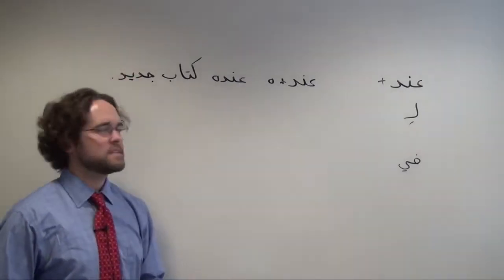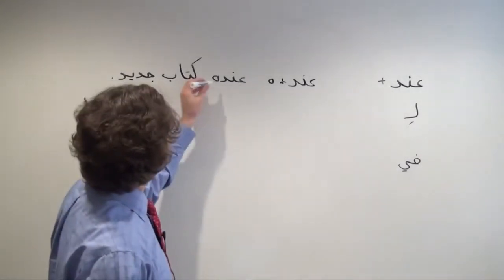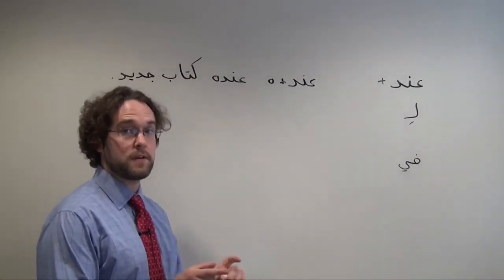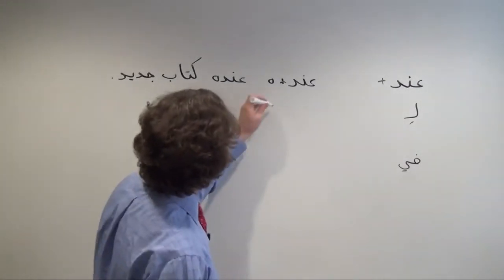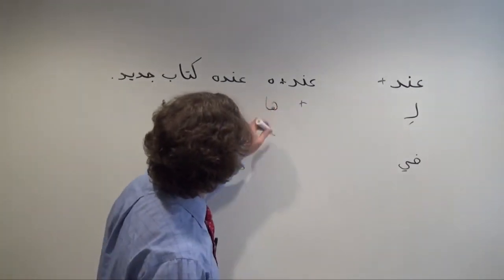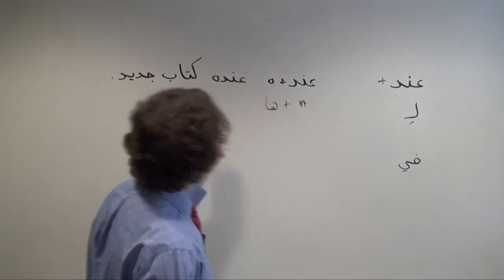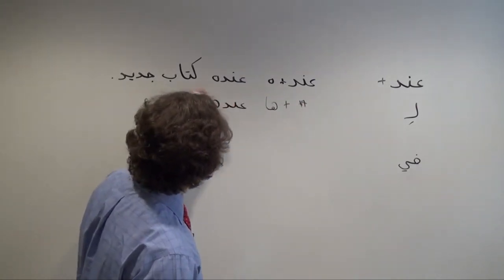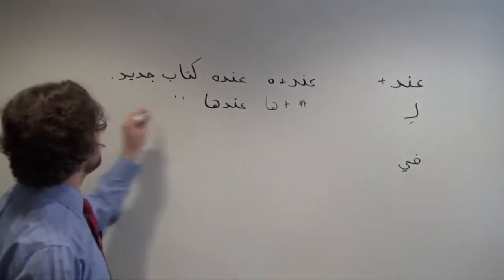عنده, he has. If I wanted to say she has a new book, instead of using ها, I would use the هي particle, the هي suffix, possessive suffix, ها, and I would wind up with عندها كتاب جديد.